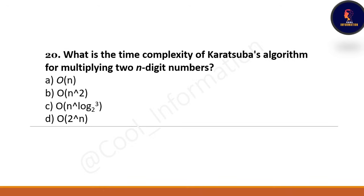Next question: what is the time complexity of the Karatsuba algorithm for multiplying two n-digit numbers? The correct option is Option C — O(n^(log 3 base 2)). You may also find the option written as O(n^1.585), which is the same thing. If the question asks about multiplying two n-digit numbers using a traditional approach, then the time complexity is O(n²).